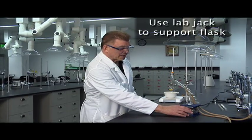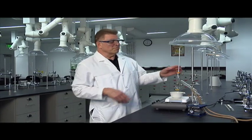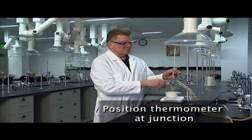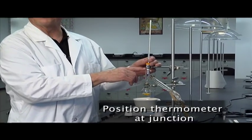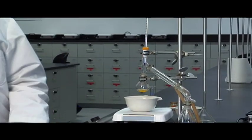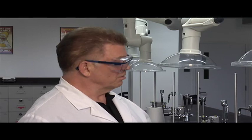You always want to use the lab jack to support the collection flask. Be mindful of the thermometer position. If the thermometer bulb is too low, you read a temperature that's artificially high. If you position the bulb too high, the temperature you read is artificially low. The temperature in the distillation, you won't see a temperature rise on the thermometer until the vapors reach the bulb. So you can see boiling in the pot without a temperature rise. So just be patient and you should be able to watch the vapor climb up the adapter and touch the thermometer bulb.